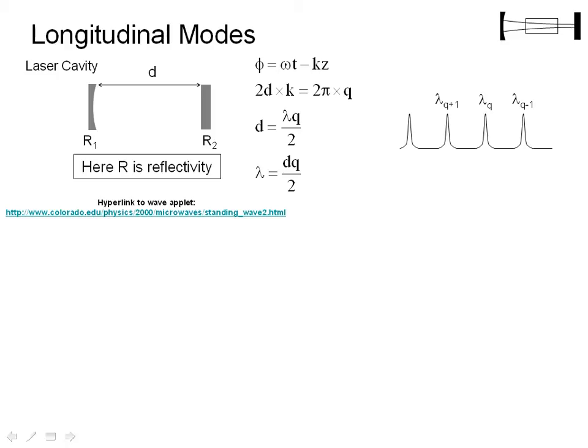So we're going to assume we have some laser cavity with a length D, the spacing between the mirrors, and mirror reflectivity R1 and R2. And I'll say this again at the end, but we use capital R sub 1 and capital R sub 2, both for the radius of curvature and the reflectivity. It's confusing, I know, but that's what the notation is.